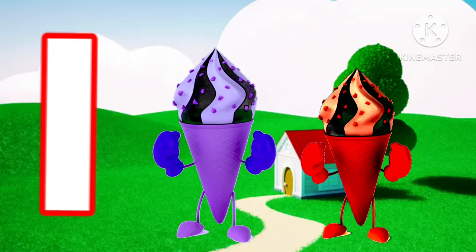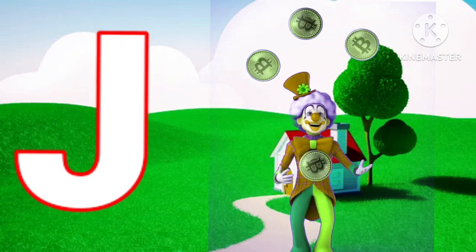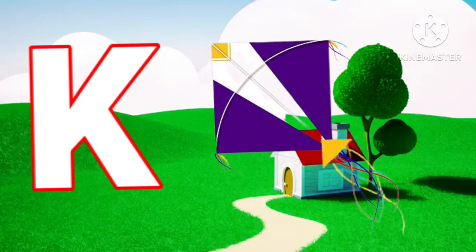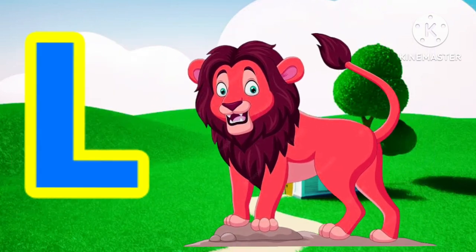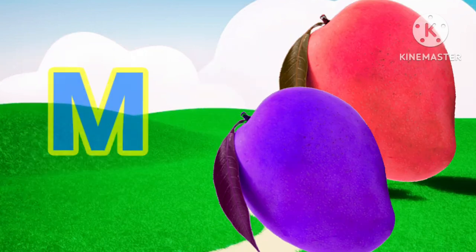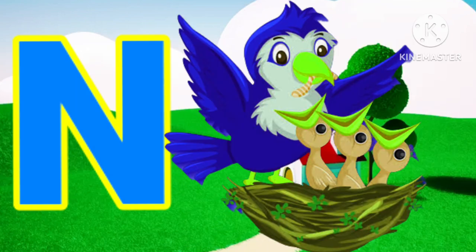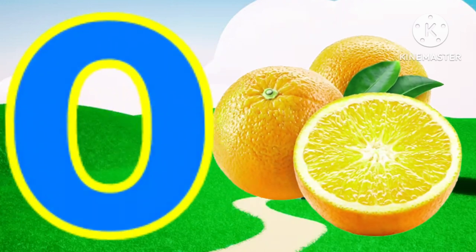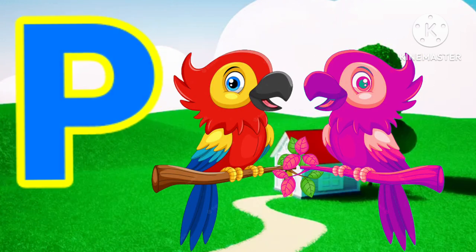I for ice cream, J for joker, K for kite, L for lion, M for mango, N for nest, O for orange, P for parrot.